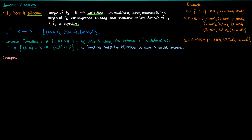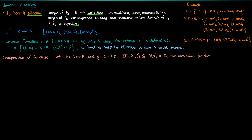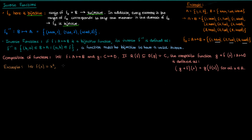The last topic is the composition of two functions. Suppose f maps elements in set a to set b, and g maps elements in set c to set d. As long as the range of f is contained within the domain of g, we can write the composite function g(f(x)), which maps elements in set a directly to set d. For example, if f(x) = x² and g(x) = x³, both mapping real numbers to real numbers, then g(f(x)) = g(x²) = (x²)³ = x⁶.